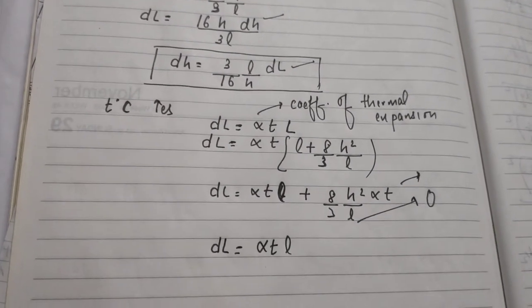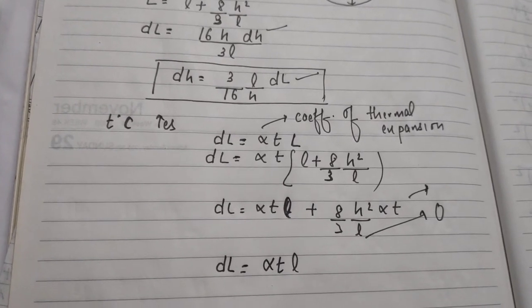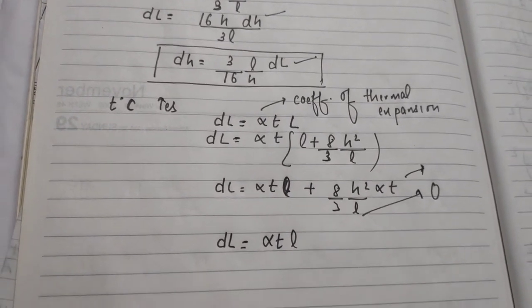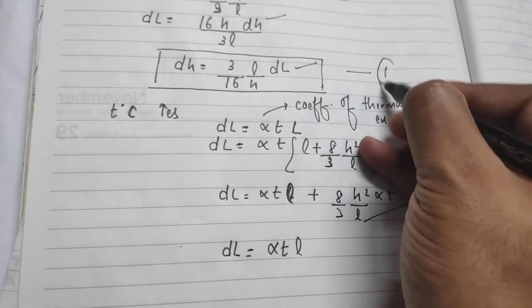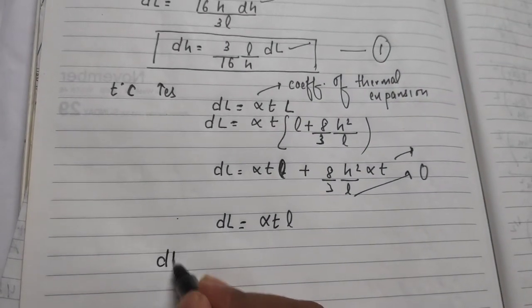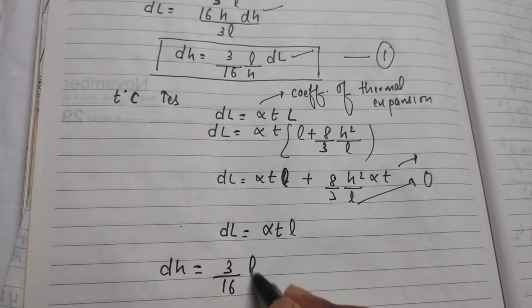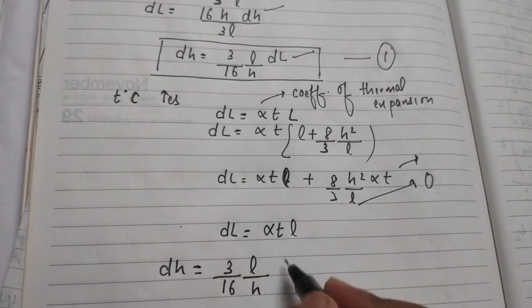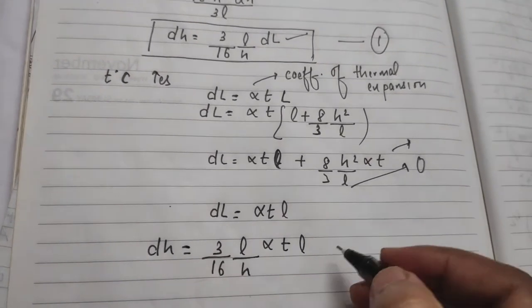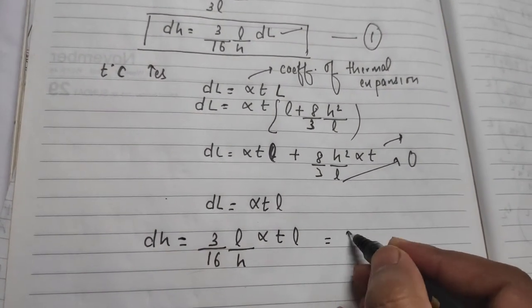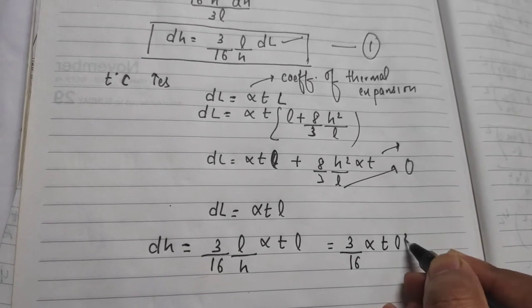So dL becomes alpha × T × small L. We know that dL equals alpha × T × small L. Substituting into the dH equation: dH equals (3/16) × (L/H) × dL = (3/16) × (L/H) × alpha × T × L. This can also be written as dH = (3/16) × alpha × T × L² / H.